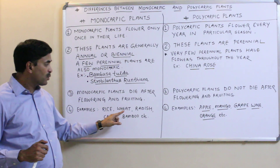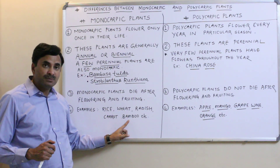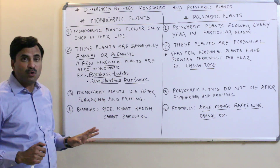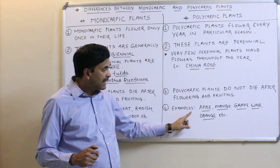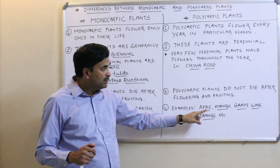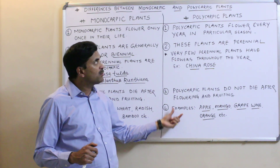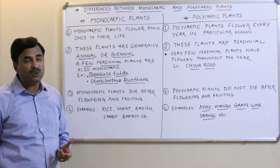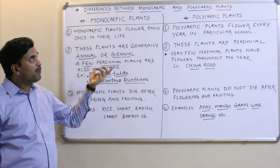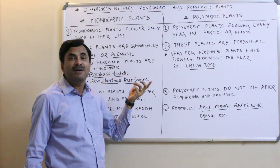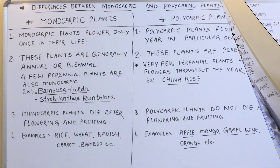Examples of monocarpic plants include rice, wheat, radish, carrot, and bamboo. Examples of polycarpic plants are apple, mango, grapevine, and orange. These were the key differentiating features between monocarpic and polycarpic plants. Thanks a lot for watching.